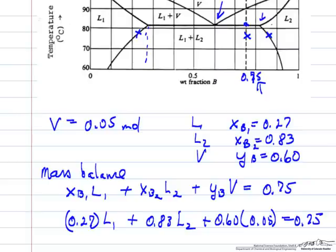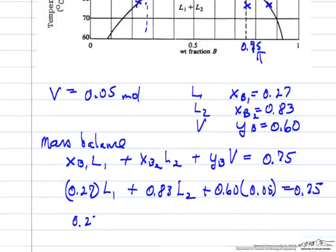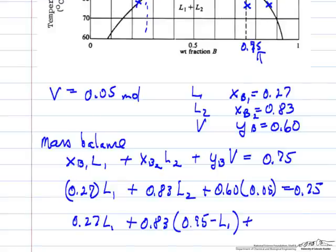The other thing we have to do to solve this is to say 0.27 liquid 1 plus 0.83 times the amount of liquid 2, so liquid 1 plus liquid 2 must add up to 0.95 moles because 0.05 moles is vapor. And six tenths of 0.05 is 0.03.